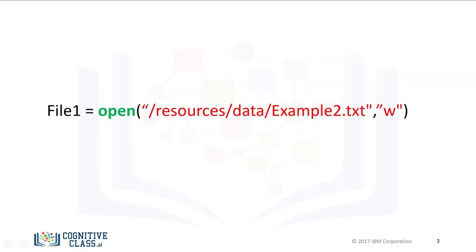We can create the file example2.txt as follows. We use the open function. The first argument is the file path. This is made up of the file name. If you have that file in your directory, it will be overwritten, and the file directory. We set the mode parameter to w for writing. Finally, we have the file object.